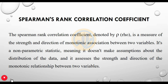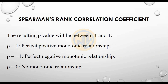The Spearman rank correlation coefficient, denoted by rho, is a measure of the strength and direction of a monotonic association between two variables. It is a non-parametric test, meaning it does not make assumptions about the distribution of the data, and it assesses the strength and direction of the monotonic relationship between two variables.